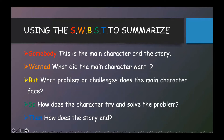In order to do this, you must ask yourself these questions while reading the story: Who is the main character of the story? Where did the story take place? What did the main character want? What problems or challenges does the main character face? How does the character try and solve the problem? How does the story end? Once you have answered these questions, you will be ready to write your summary.